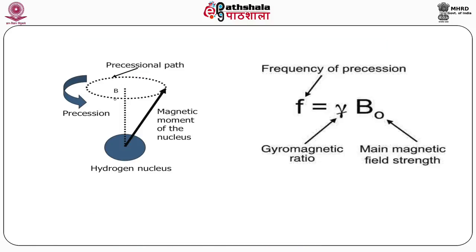Since protons behave like tiny magnets, the alignment of their tiny magnetic moments in an external magnetic field causes these magnets to precess about the magnetic field. This precession requires a spin angular momentum and a torque perpendicular to the angular momentum. Precession is when protons rotate around themselves and their axis of rotation also moves, forming a cone-like shape. This motion of the axis of rotation of the proton is called precession.